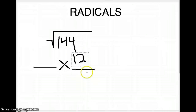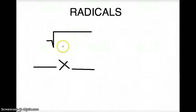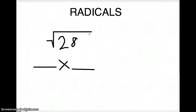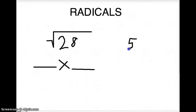Let's do some harder ones. What if we wanted to do the square root of 28? Two numbers cannot be multiplied to get 28 unless it's a decimal. If we actually did the square root of 28, we would get 5.2915 and so on — it is a non-terminating decimal.